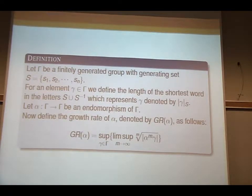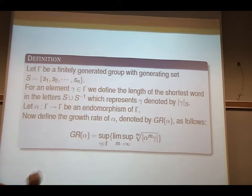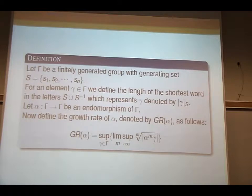And now suppose that alpha from gamma to gamma, the endomorphism of gamma, and define the growth rate of alpha, be denoted by GR(alpha) growth rate, the supremum of the m-th root of the length of alpha^m over gamma, where gamma is an element of gamma and goes to infinity.